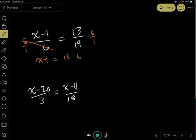And then we can multiply both sides by 19, so these cancel. That makes this 19 times x minus 1 equals 13 times 6. I'm leaving it like this just to show you.